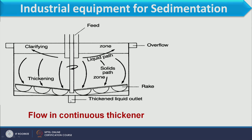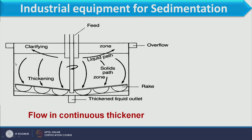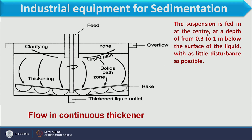This section at the bottom is the exit of the sedimenter. This is the schematic of the sedimentation tank; due to slight variation in feed inlet and exit, other sedimenter types can be defined, but the basic structure is like this. The suspension is fed at the centre at a depth of 0.3 to 1 meter below the surface of the liquid with as little disturbance as possible.